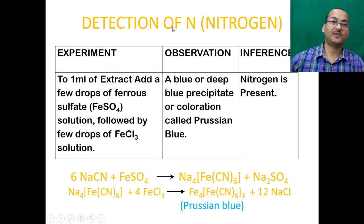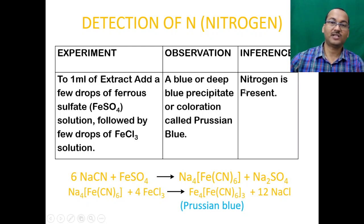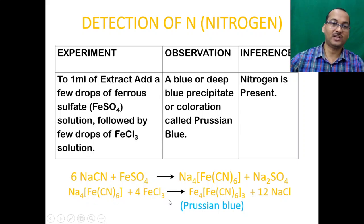To detect nitrogen, take 1 ml of the Lassaigne extract and add a few drops of ferrous sulfate solution, followed by a few drops of ferric chloride solution. A deep blue precipitate or coloration called Prussian blue will be formed, indicating nitrogen is present. The sodium cyanide in the extract reacts with ferrous sulfate giving sodium ferrocyanide, which then reacts with ferric chloride giving ferric ferrocyanide — this is called Prussian blue.